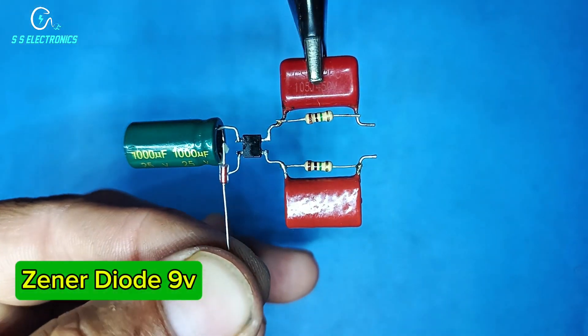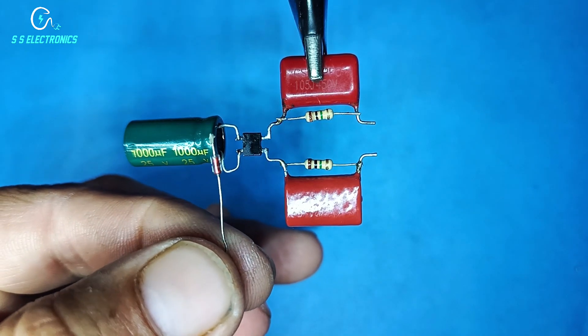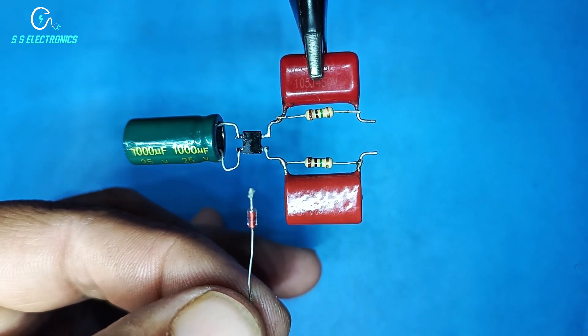Zener diode 9V. Diode connecting with capacitor.